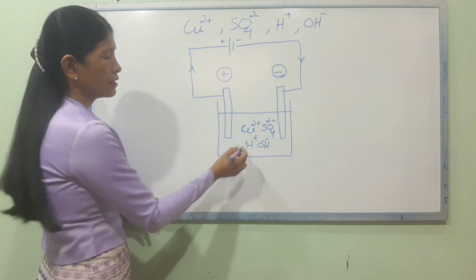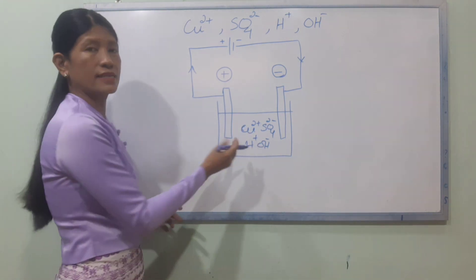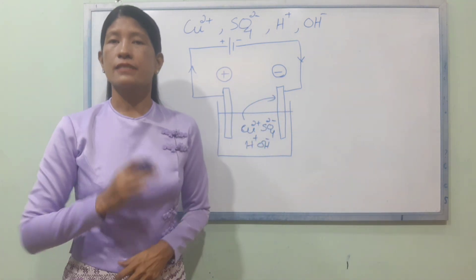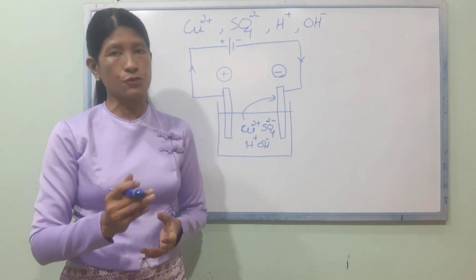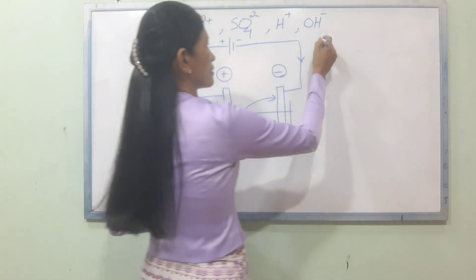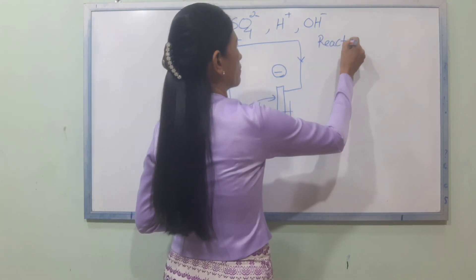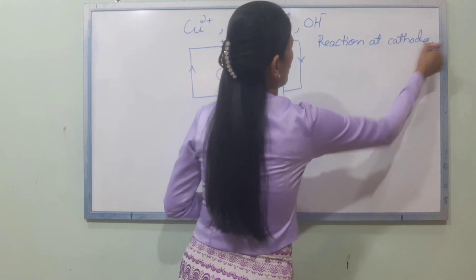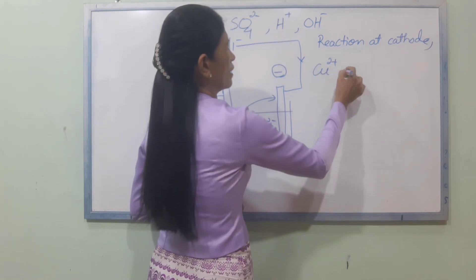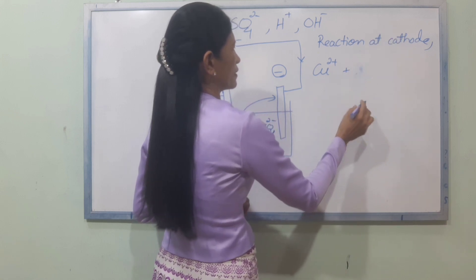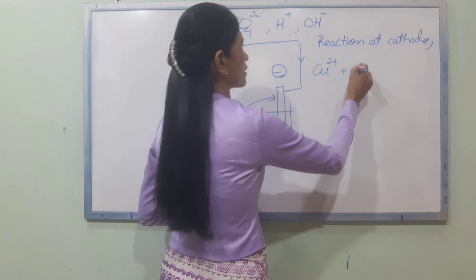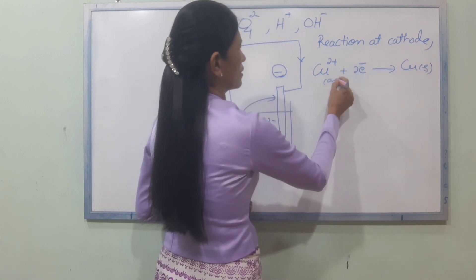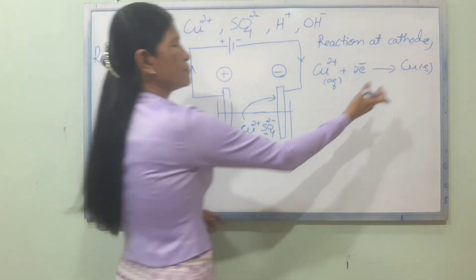Electrolysis. Cu2 plus and H plus. Using the electrochemical series, Cu2 plus is above H plus. Cu2 plus ions are preferentially discharged over H plus ions according to the electrochemical series.